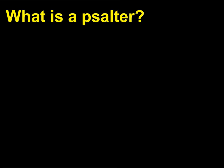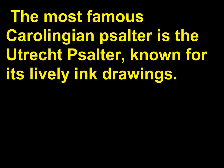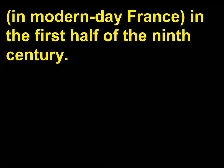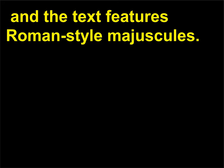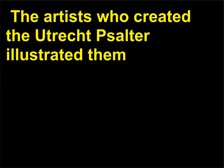What is a Psalter? A Psalter is a book containing the text of the Book of Psalms from the Old Testament. The most famous Carolingian Psalter is the Utrecht Psalter, known for its lively ink drawings. The manuscript was produced at the Imperial Scriptorium in Reims, in modern-day France, in the first half of the 9th century. The illustrations incorporate architectural and landscape scenes, and the text features Roman-style majuscules. As Psalms are not narrative, they are challenging to illustrate; the artists illustrated them by expressively visualizing specific phrases from the text.